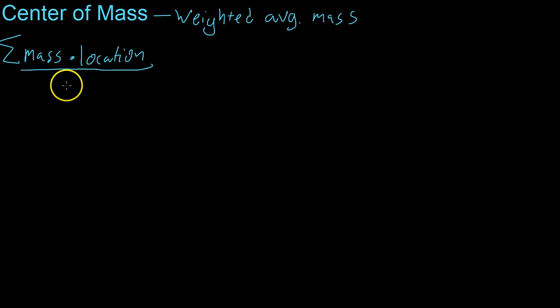divided by the total mass. So more mathematically, you get that the location of the center of mass is the sum of the mass itself times that location, all divided by the total mass.